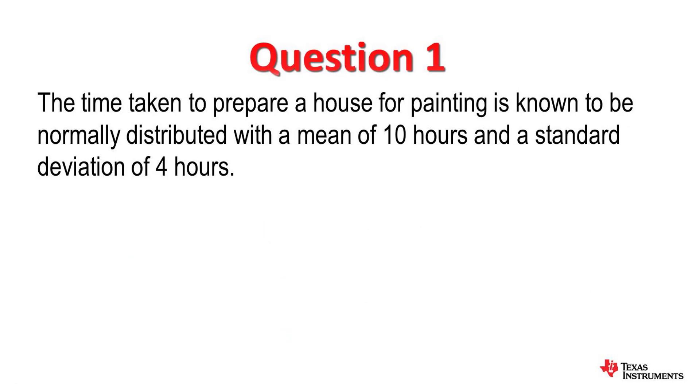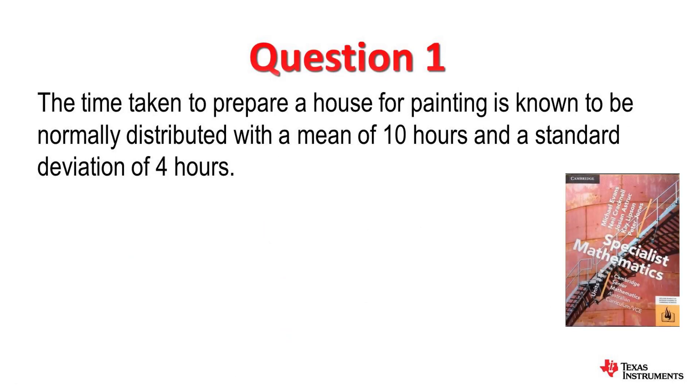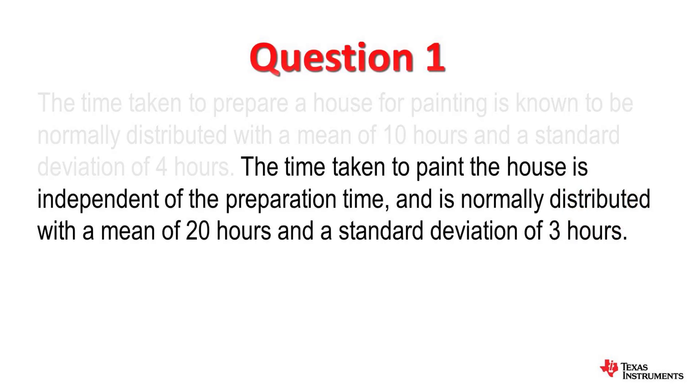First, an example, this one taken from Cambridge. The time taken to prepare a house for painting is known to be normally distributed with a mean of 10 hours and a standard deviation of 4 hours. So we're going to let random variable capital X represent the time taken to prepare the house. The time taken to paint the house is independent of the preparation time. It's also normally distributed with a mean of 20 hours and a standard deviation of 3 hours. We're going to let random variable capital Y represent the time taken to paint the house.